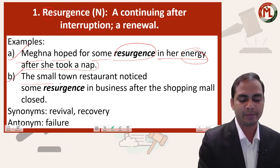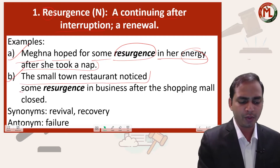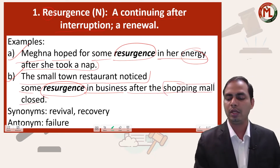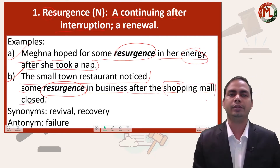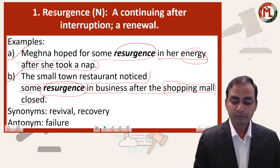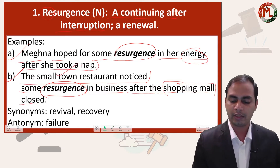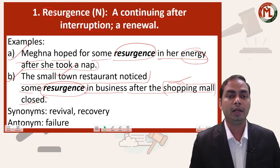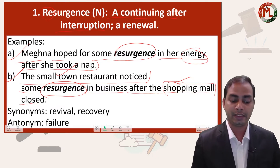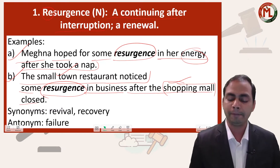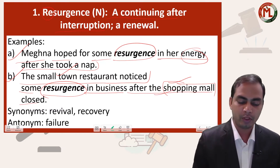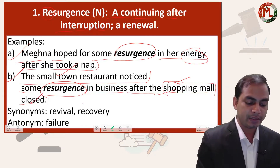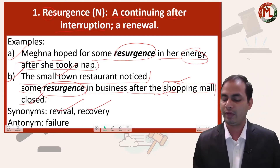The second example is: the small town restaurant noticed some resurgence in business after the shopping mall closed. Shopping mall ke jaane se choti choti shops pe fark padta hai. Yahan small town restaurant mein, just because there was a shopping mall people went there and ate there, so his business was a little down. But ek resurgence aaya — matlab punah gati aayi, chizein phirse achi hoin jab shopping mall band ho gaya. Resurgence synonyms are revival and recovery, and antonym is failure.